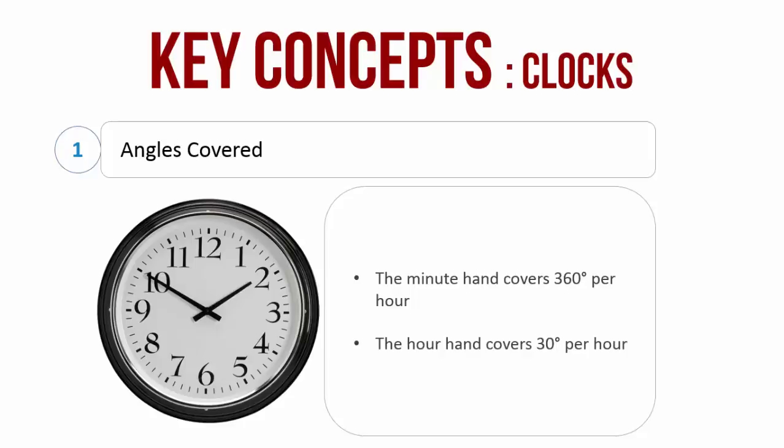Likewise, in one hour the hour hand covers only 30 degrees. That is, from 1 o'clock to 2 o'clock, the hour hand moves only from 1 to 2, which is 30 degrees.